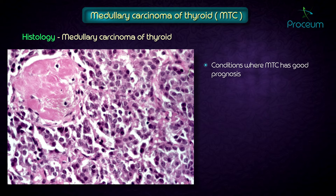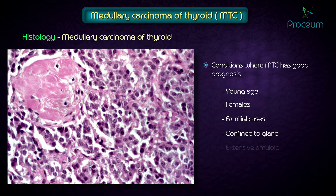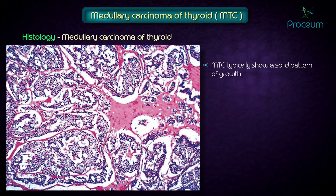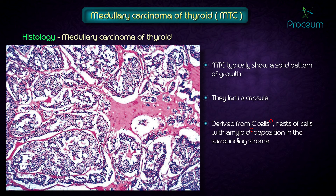Good prognostic factors include younger age, female sex, familial cases, and disease confined to the gland with extensive amyloid. These tumors typically show a solid pattern of growth and lack a capsule.